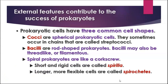One of the things that makes bacteria very successful is their external features, which enhance how they act and what they do. There are three common cell shapes used for part of the classification of bacteria. Cocci are spherical prokaryotic cells — coccus is the singular. Bacilli are rod-shaped, sometimes thread-like or filamentous — bacillus is the singular. Then we have spiral prokaryotes that are kind of like a corkscrew. The short and rigid ones are called spirilla, and the longer, more flexible ones are called spirochetes.